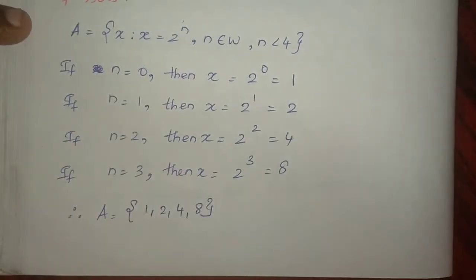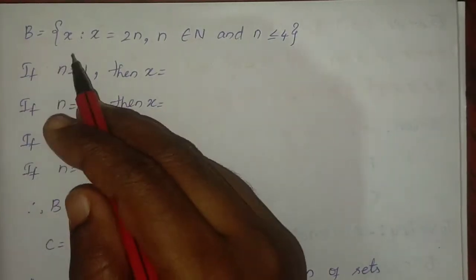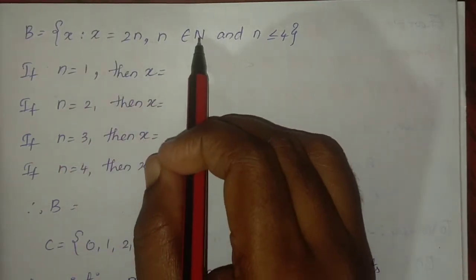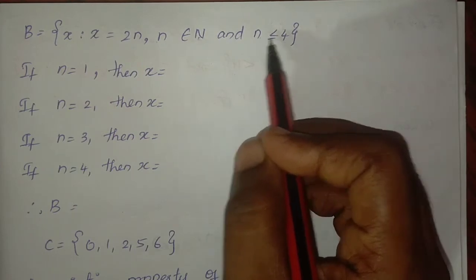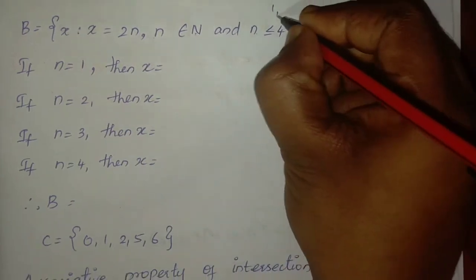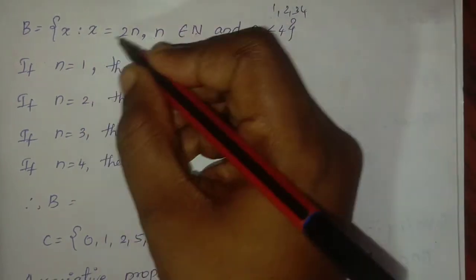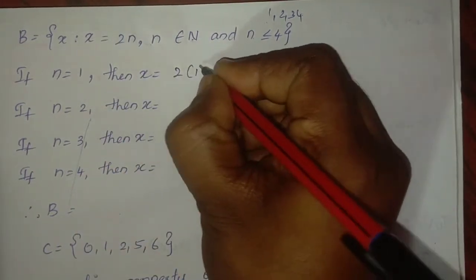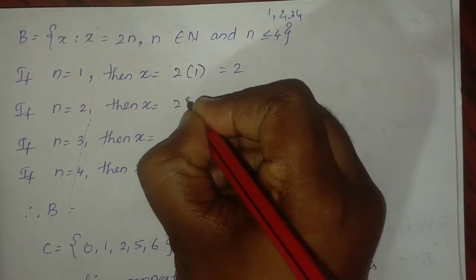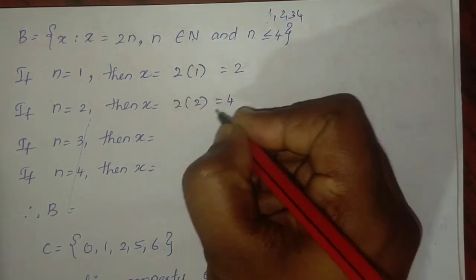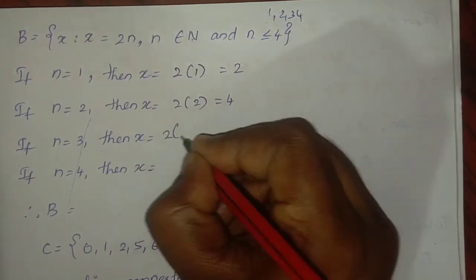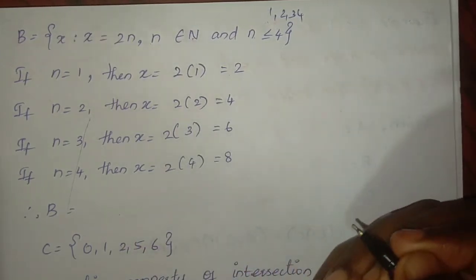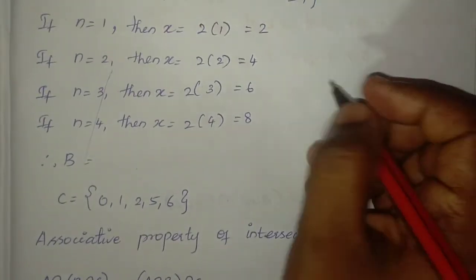For set B: x equals 2n, n belongs to natural numbers, n less than or equal to 4, so n equals 1, 2, 3, 4. Substituting: 2×1=2; 2×2=4; 2×3=6; 2×4=8. So B equals {2, 4, 6, 8}.